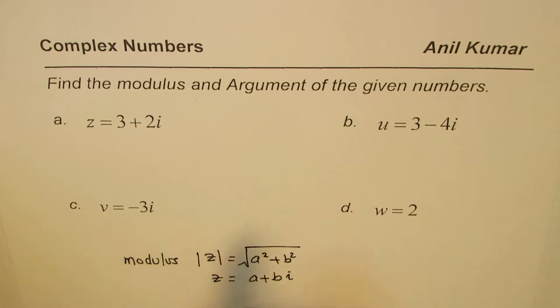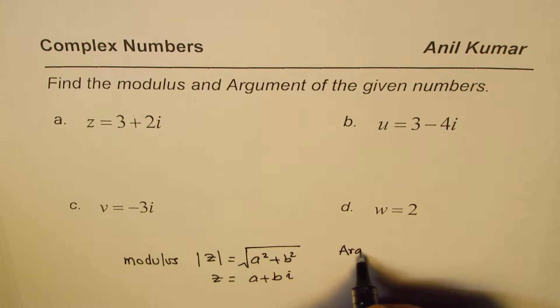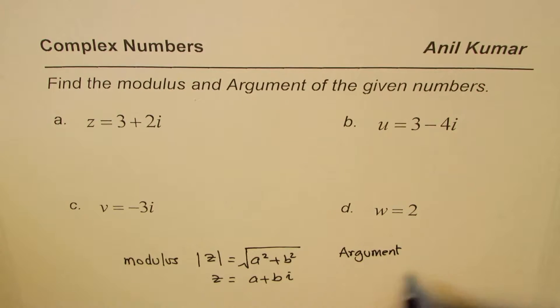As far as the argument is concerned, argument is the angle which it makes with the real axis. So argument phi equals to tan inverse...